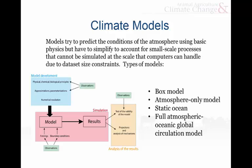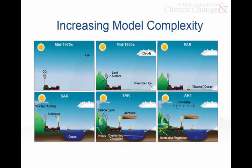Because computers have a limited amount of space to do calculations, they started out by doing something very simple called a box model, where you have one number going in, a few calculations, and then another number coming out — usually some sort of temperature. And then over time, they've added other models as well.